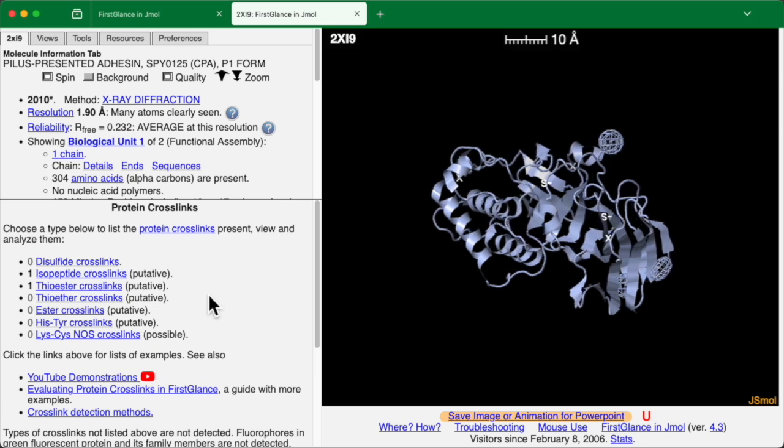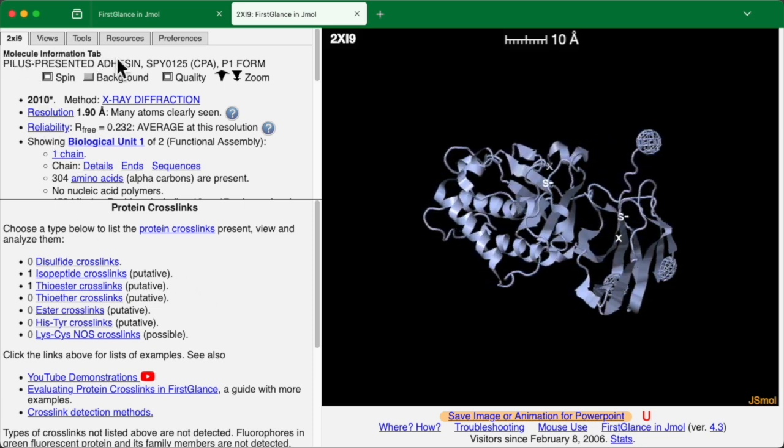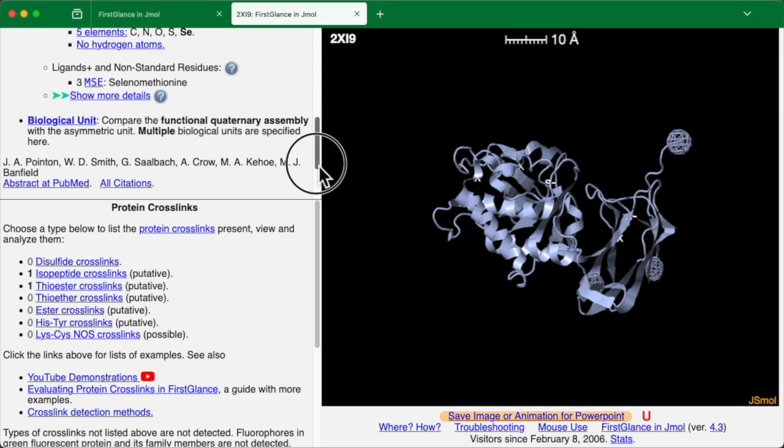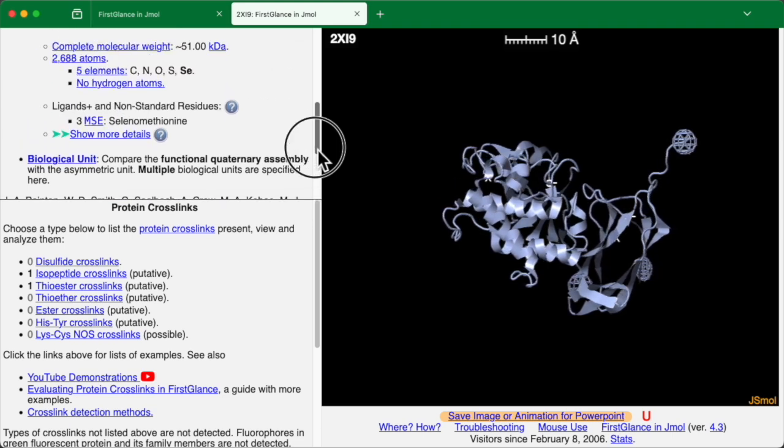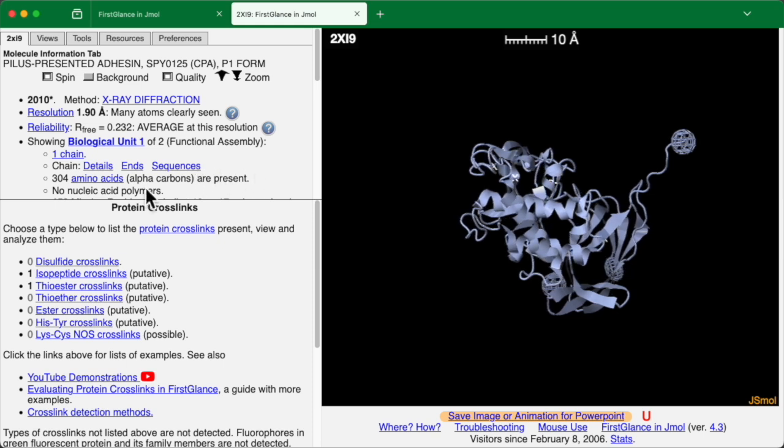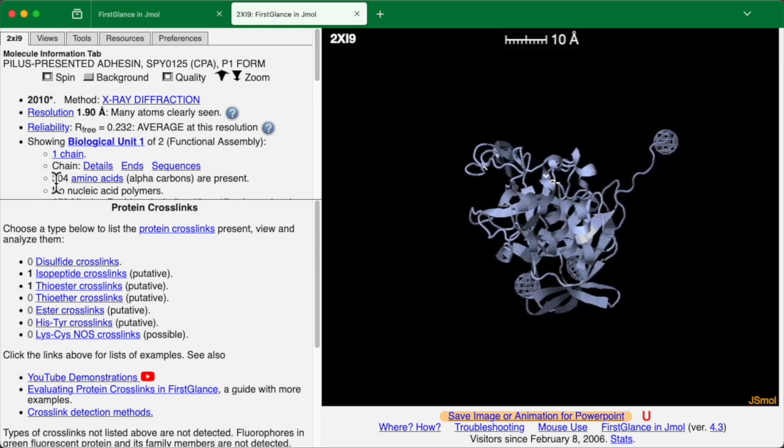Before we move ahead with that, if you've used FirstGlance, you know that up here in the molecule information tab is a wealth of information about this particular molecule. Not only what is shown in this panel, but the links here go to information in considerable depth.